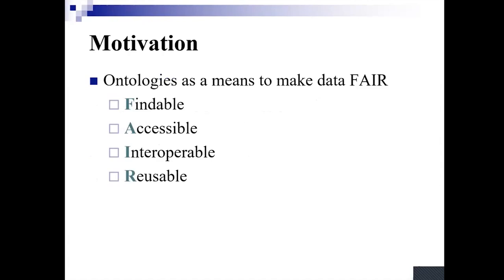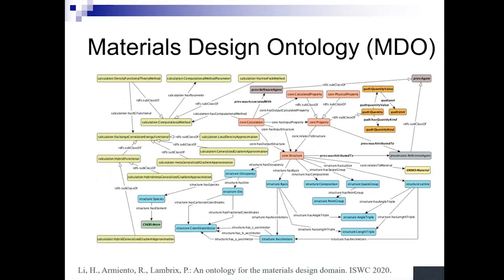Ontologies have been suggested as a technology to make data FAIR. For this audience, and considering the previous talks in this workshop, I do not need to explain FAIR anymore. So, what were ontologies? Well, ontologies can be seen as a way to define the terminology in a domain by defining concepts, relations, and axioms.